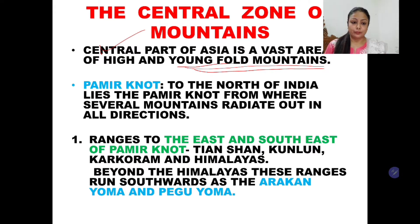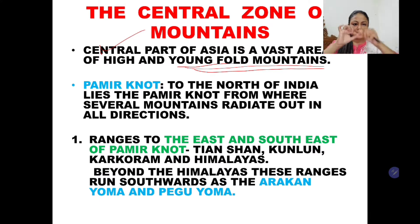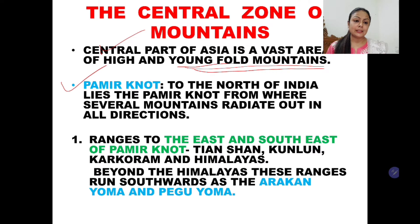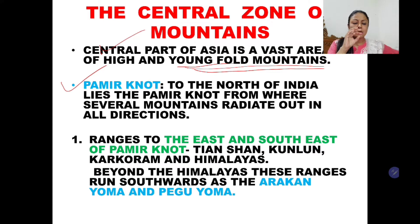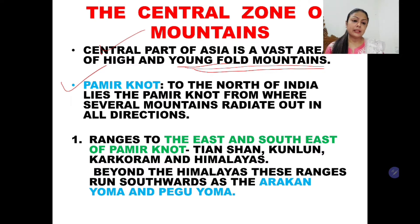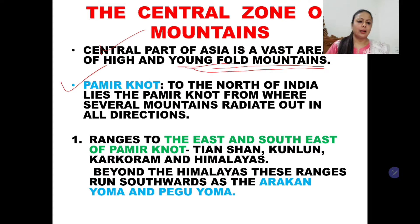These mountains seem like coming out from a knot. When we take a thread, twist it and stretch, we get a knot. There are two knots in Asia: one is the Pamir knot and another is the Armenian knot. From the Pamir knot, mountains seem to radiate out towards the east and the west. Similarly, from the Armenian knot, mountains also seem to radiate outward.